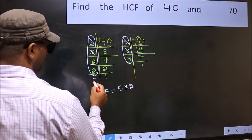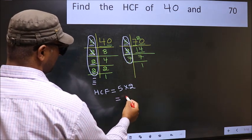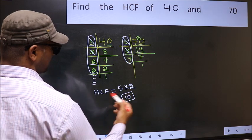No more numbers have been left out. So our HCF is 5 into 2, 10 is our HCF.